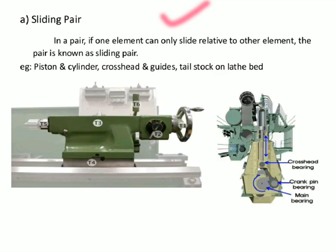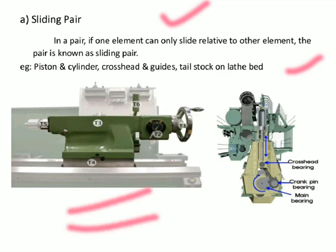A sliding pair is one in which one element can only slide relative to the other element. The pair is known as a sliding pair when the relative motion between the elements is purely sliding.